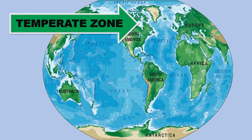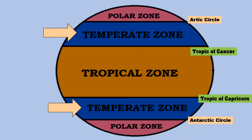The temperate zone. Earth also has two temperate zones — one to the North, between the Arctic Circle and the Tropic of Cancer, and the other to the South, between the Antarctic Circle and the Tropic of Capricorn.